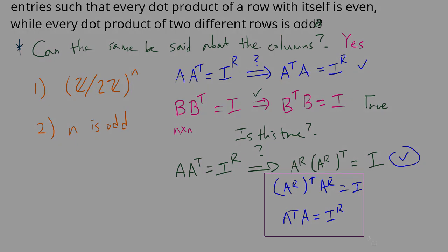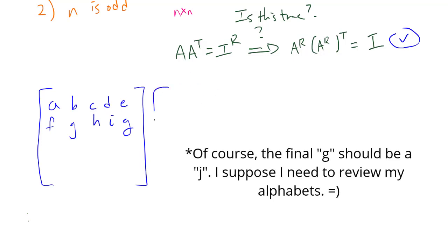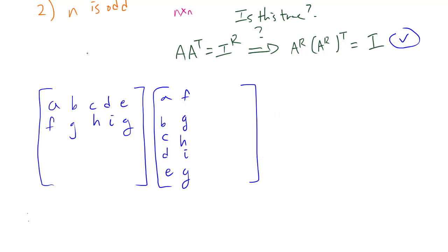So once we prove this implication, we are actually done. So let's actually try this out. Now, if your A has A, B, C, D, E as the first row, and F, G, H, I, J as the second row, and you're multiplying it by A transpose, and we're getting the identity reversed out of this. Now, remember that if you just focus on one single row, then there should be even number of odd numbers there, which means there should be odd number of zeros.